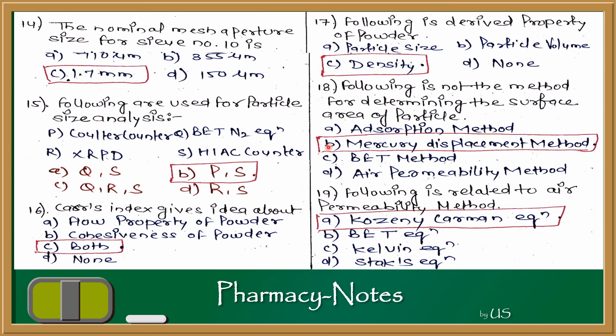Summary for Q14–19: Sieve number 10 aperture is 1.7 mm. Coulter counter and HIAC counter are used for particle size analysis. Carr's index gives ideas about both flow and cohesiveness. Density is a derived property. Mercury displacement method is not used for surface area determination. Kozeny-Carman equation is used in air permeability method to detect surface area.